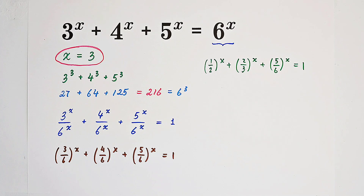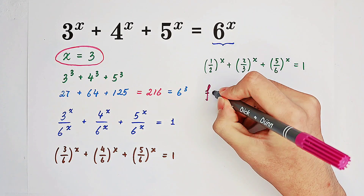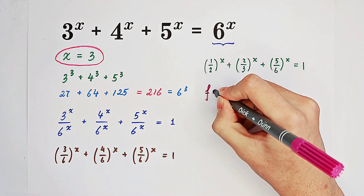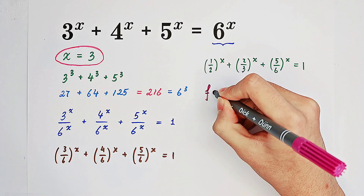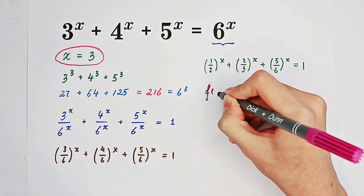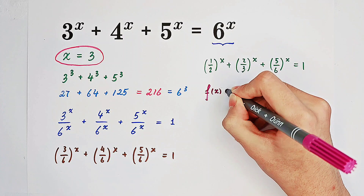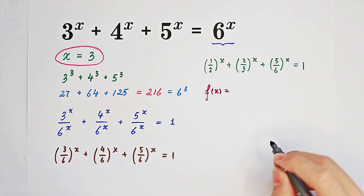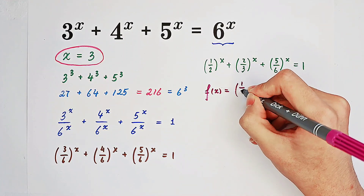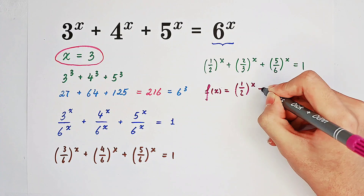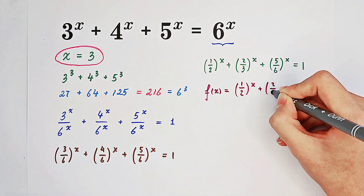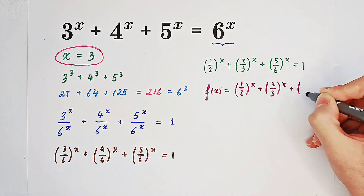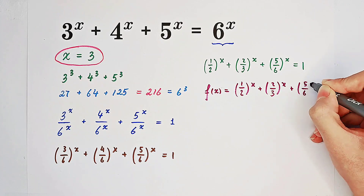Now you can see that the right-hand side is very simple — it's just a constant, just a number. Pay attention. We define the left-hand side as a function. So we let f of x equal 1 over 2 to the power of x, plus 2 over 3 to the power of x, plus 5 over 6 to the power of x.